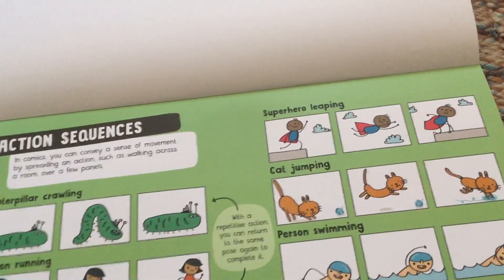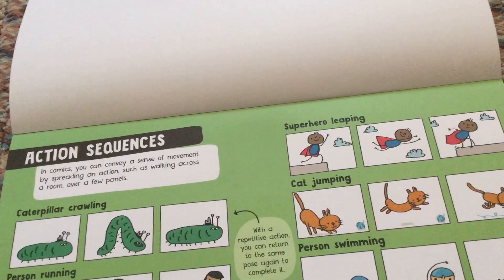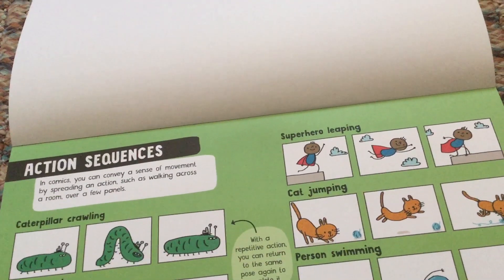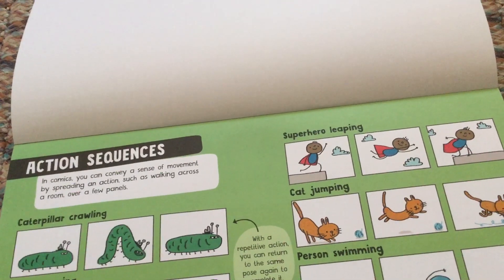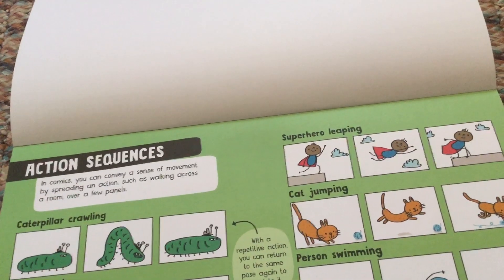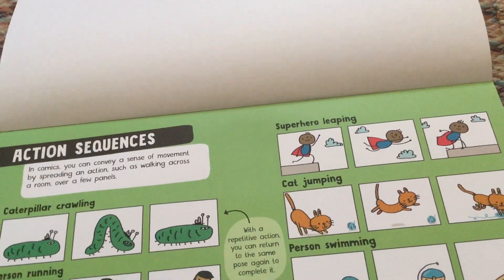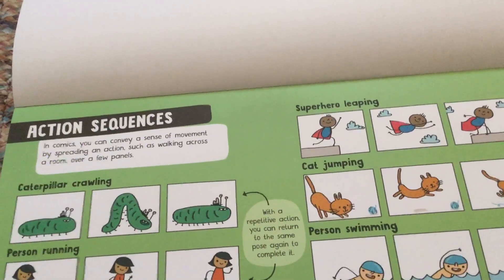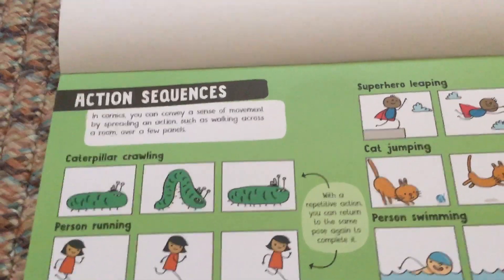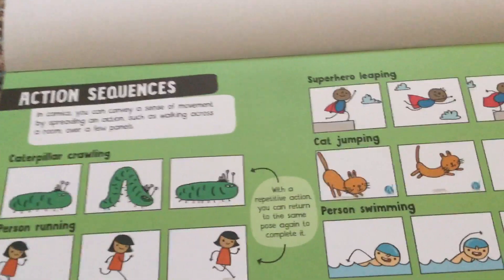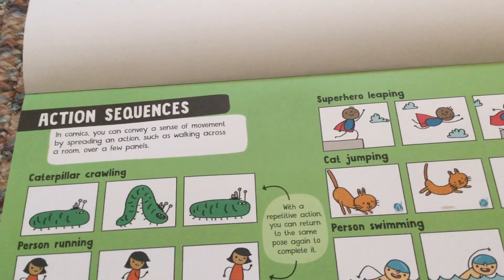In action sequences in comics, you can convey a sense of movement by spreading an action across a few panels. For example, showing a person walking across a room, a caterpillar crawling, or a person running. With a repetitive action, you can return to the same pose again to complete it.